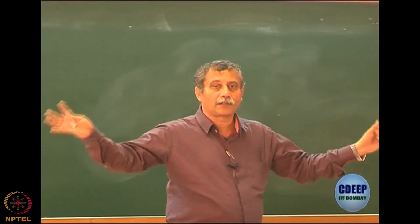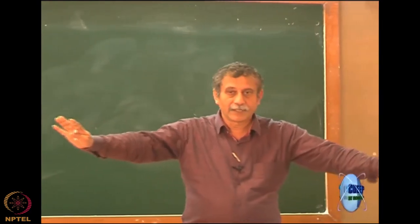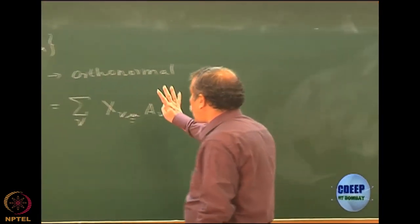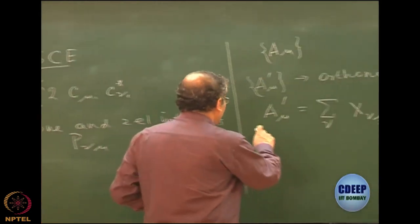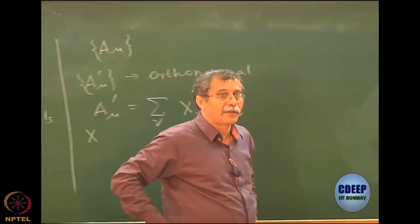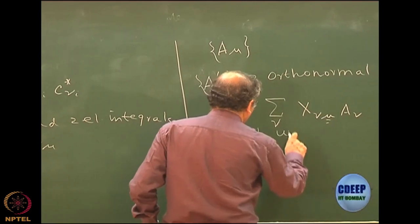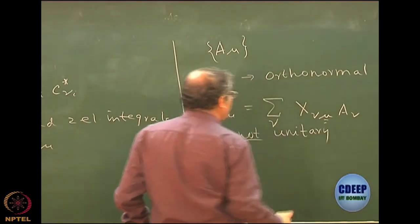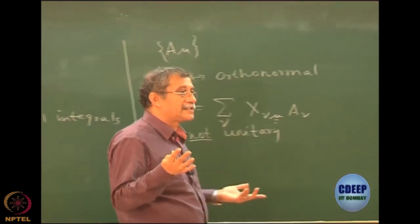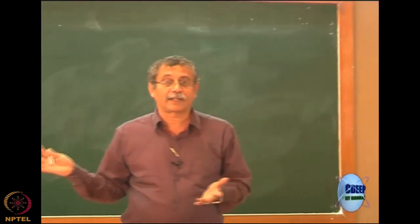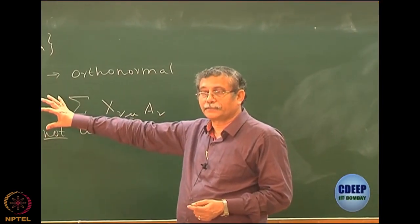It is clear that the original basis was not orthogonal, but the basis we are generating is orthogonal. Therefore, X cannot be a unitary matrix. Remember, a unitary matrix connects only one orthonormal set to another orthonormal set. In this case, the matrix connects a non-orthonormal set to an orthonormal set, and therefore X is not unitary.